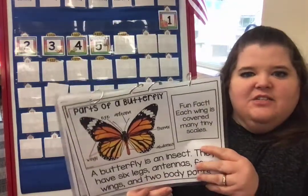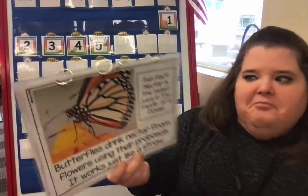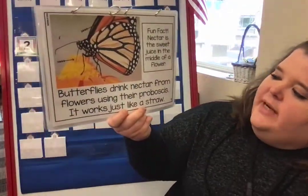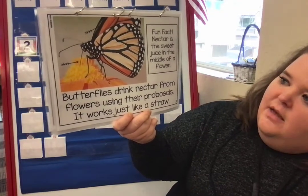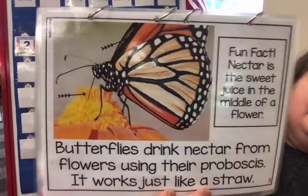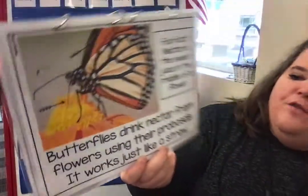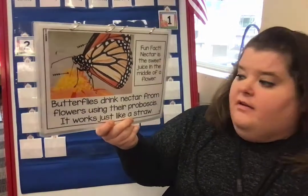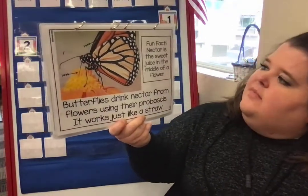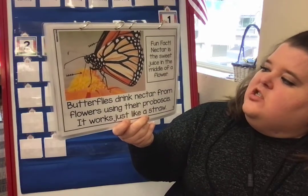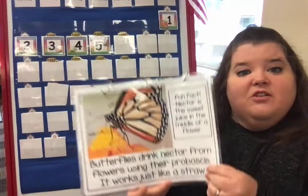Each wing is covered by teeny tiny scales, just like a fish — it has little tiny scales all over it. Butterflies drink nectar from flowers using their proboscis — look at that, it sticks out of their mouth right there. It goes into the flower and they drink the juices out of the flower. It works just like a straw.